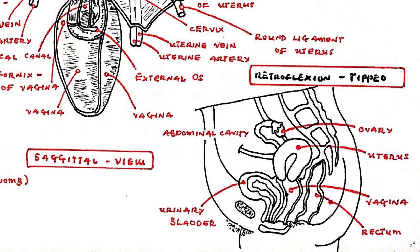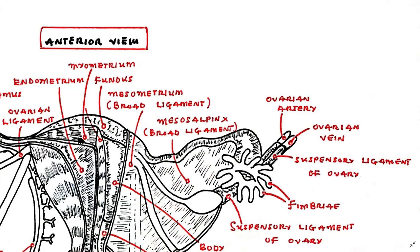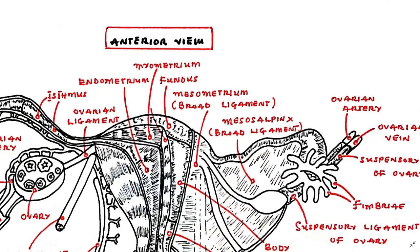The wall of the uterus is largely smooth muscle or myometrium. It is lined with a glandular surface layer of variable thickness known as the endometrium, which is extremely sensitive to hormones such as estrogen and progesterone.